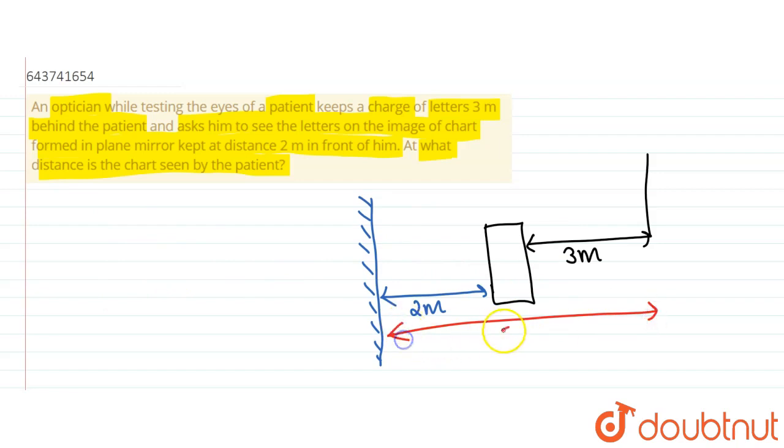Since the total distance between the object is five meters, the distance of the image from the mirror would be five meters as well. At what distance is the chart seen by the patient? What is the distance for the image and between the patient?